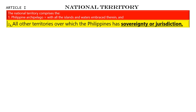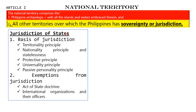Going back to national territory, the national territory comprises the Philippine archipelago and all other territories over which the Philippines has sovereignty or jurisdiction. Speaking of the jurisdiction of the Philippines, relate this again to your public international law — it is included in the coverage. The jurisdiction of the state.